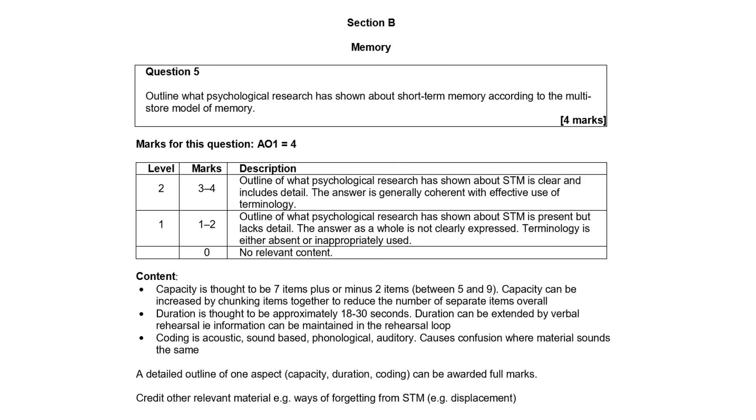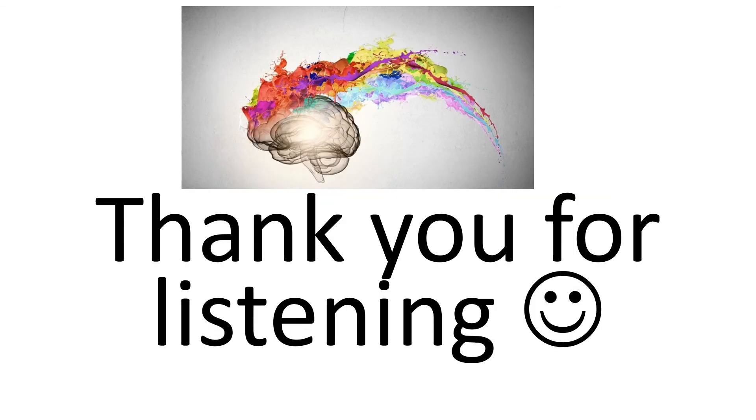Looking at a past paper question from AS Paper 1, June 2016: 'Outline what psychological research has shown about short-term memory according to the multi-store model of memory.' This is all AO1 descriptive content — the command word 'outline' signals description. The question specifically asks about short-term memory within the MSM. The mark scheme covers capacity, duration and coding of short-term memory, with credit also available for ways of forgetting from short-term memory, for example displacement. Good luck with the rest of your revision.